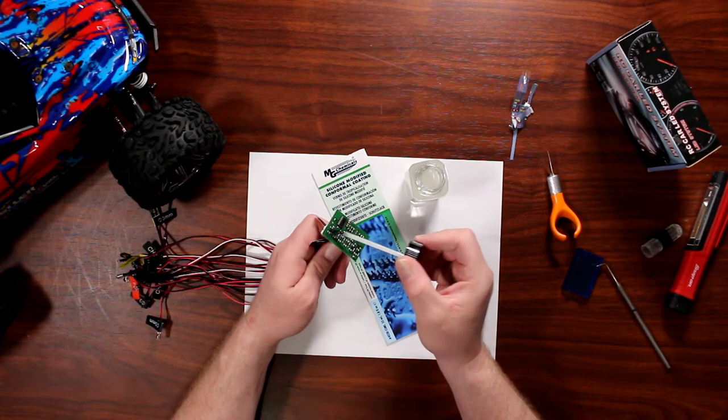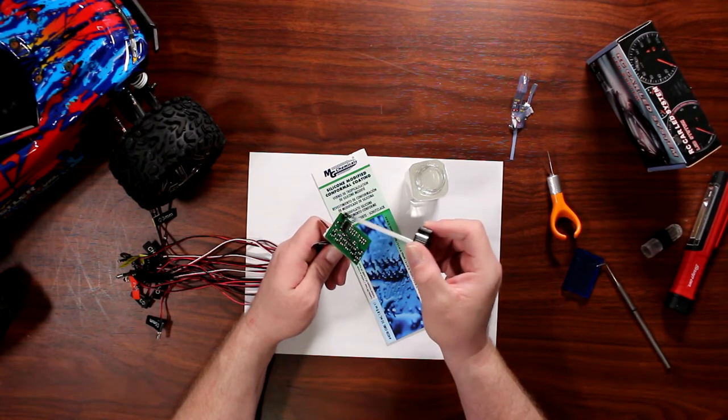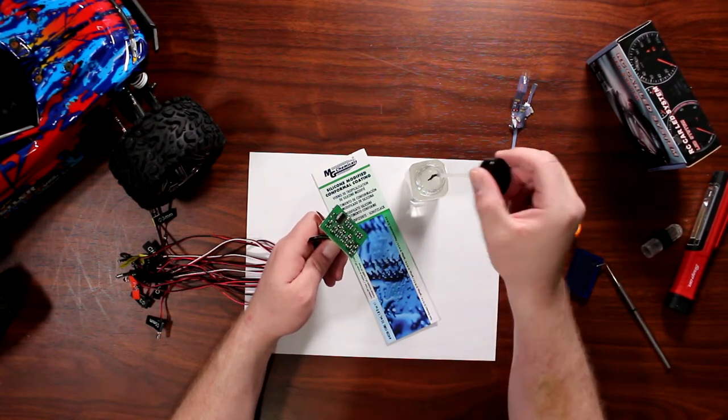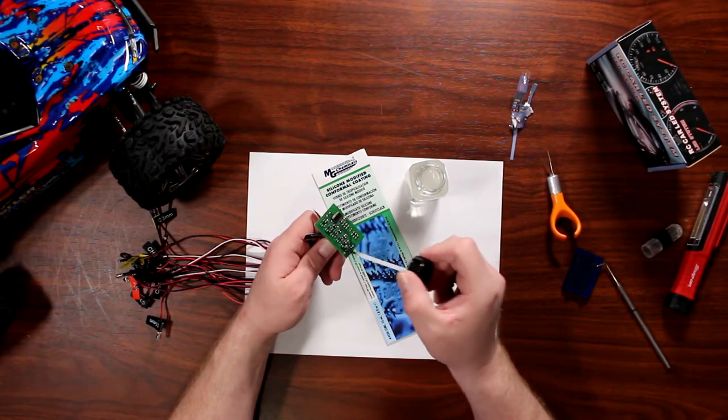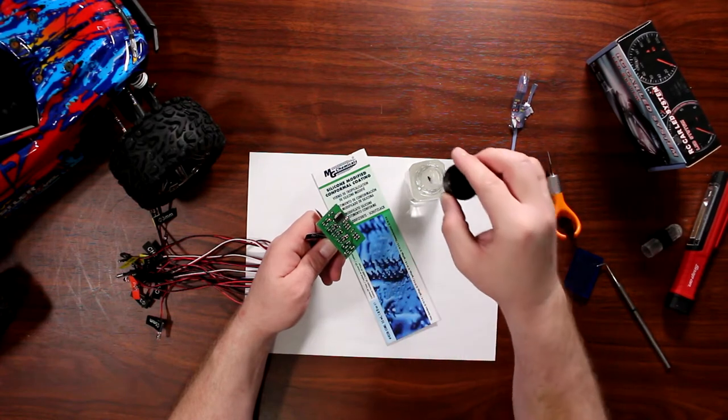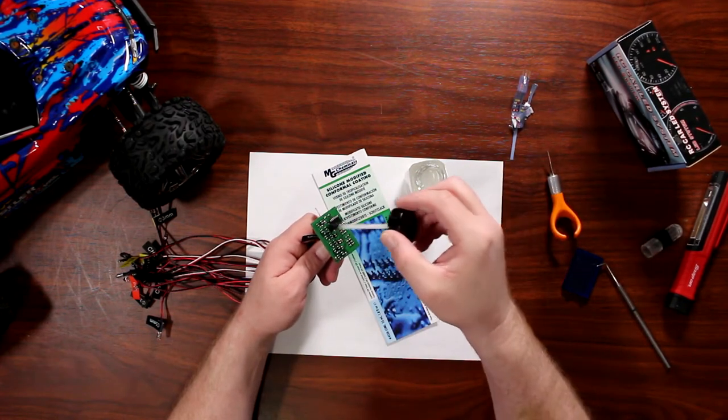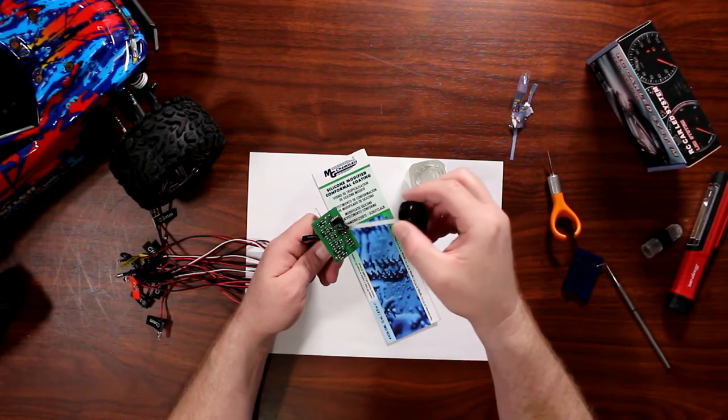What we're going to do is just coat it. It's basically like painting something. Now, because conformal coating is clear, it is hard to see where you put it.